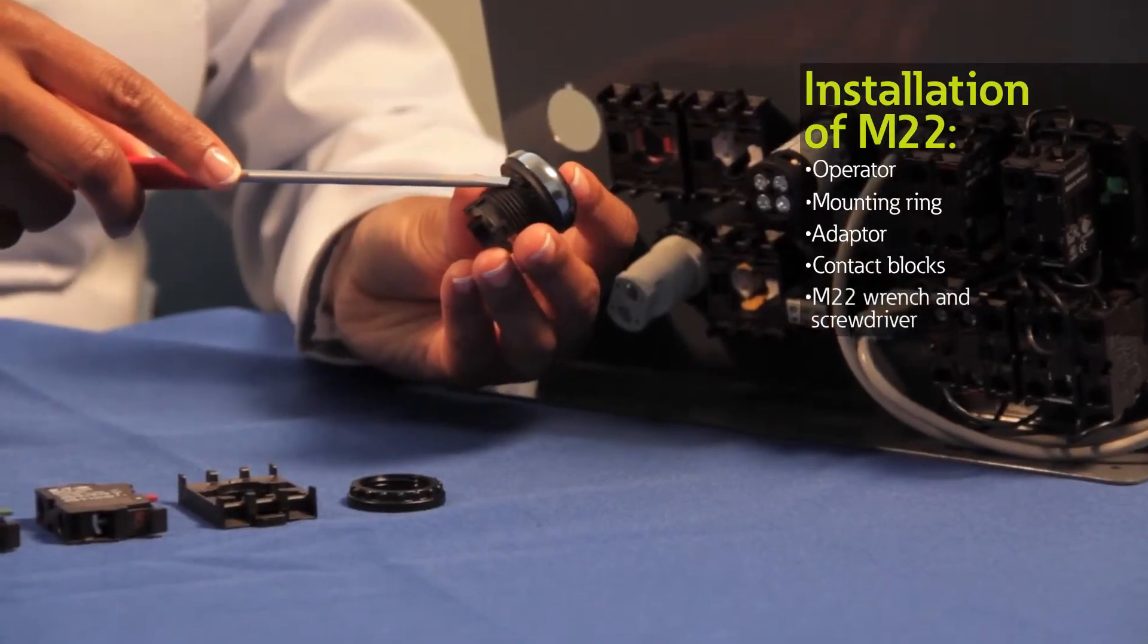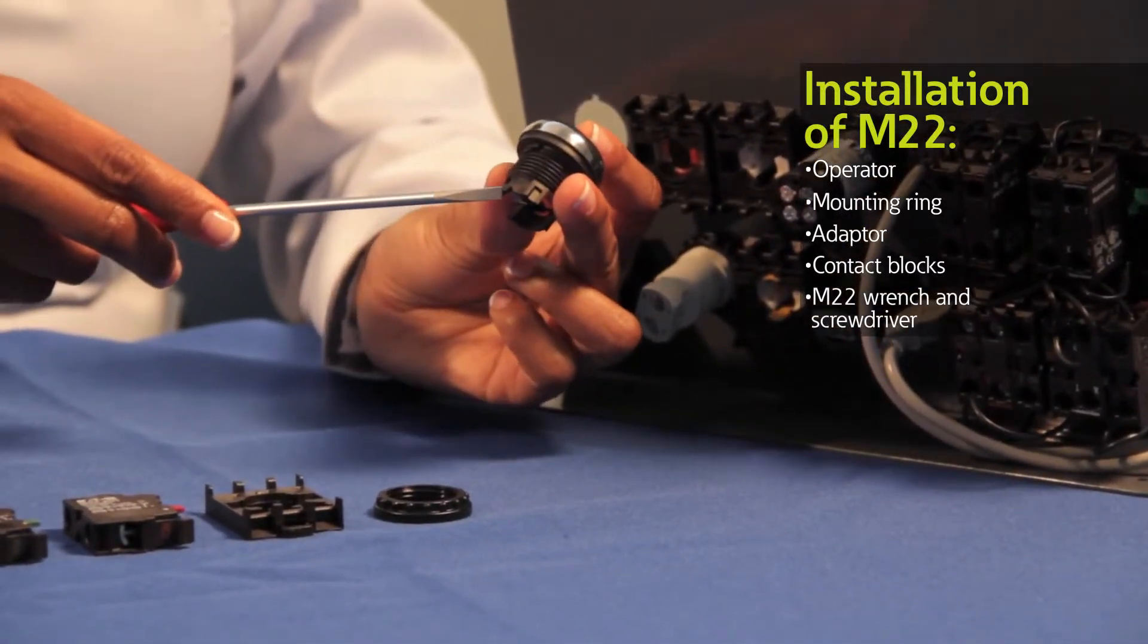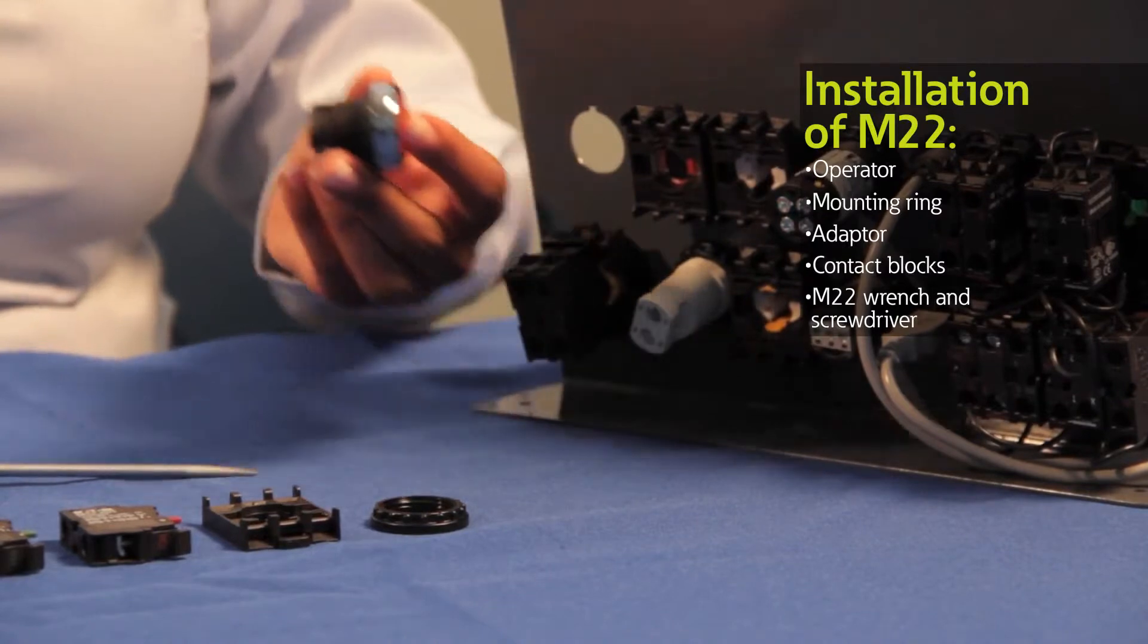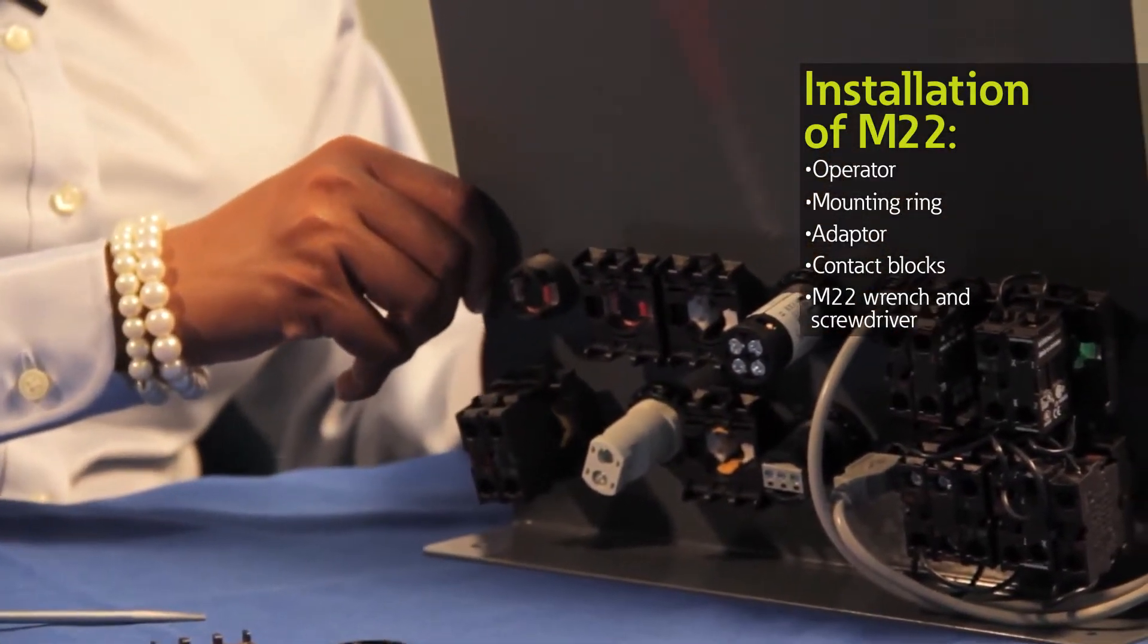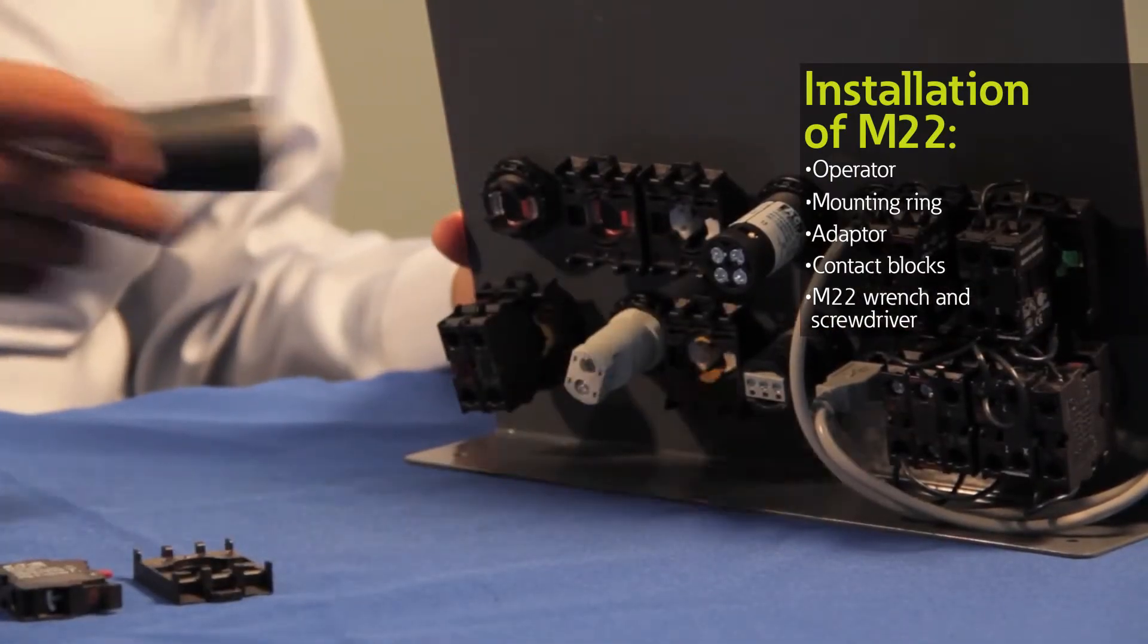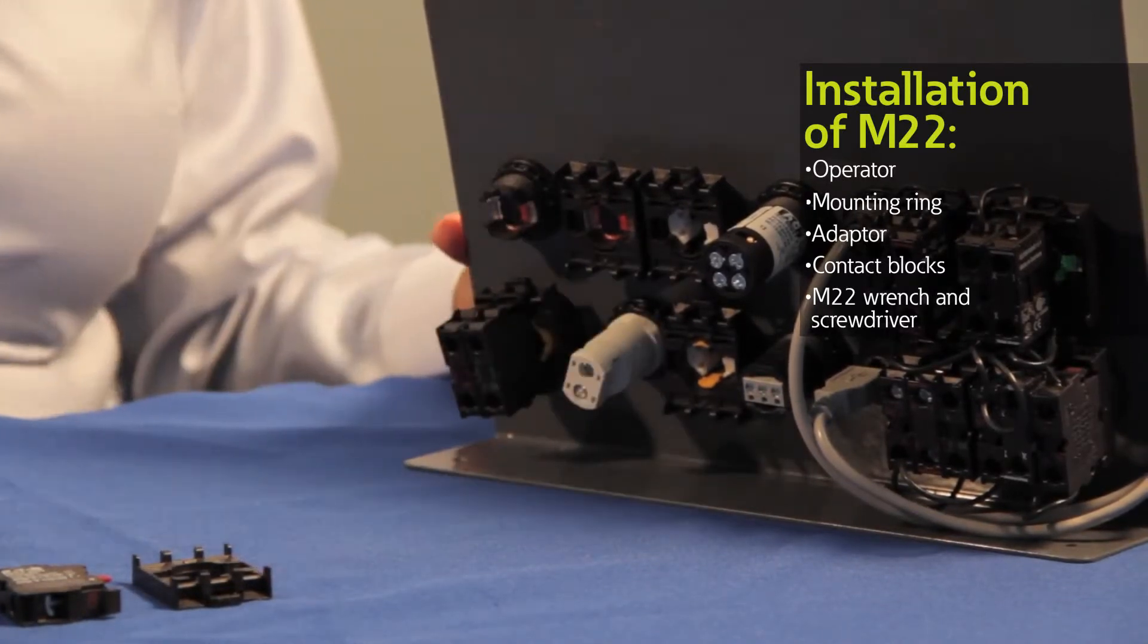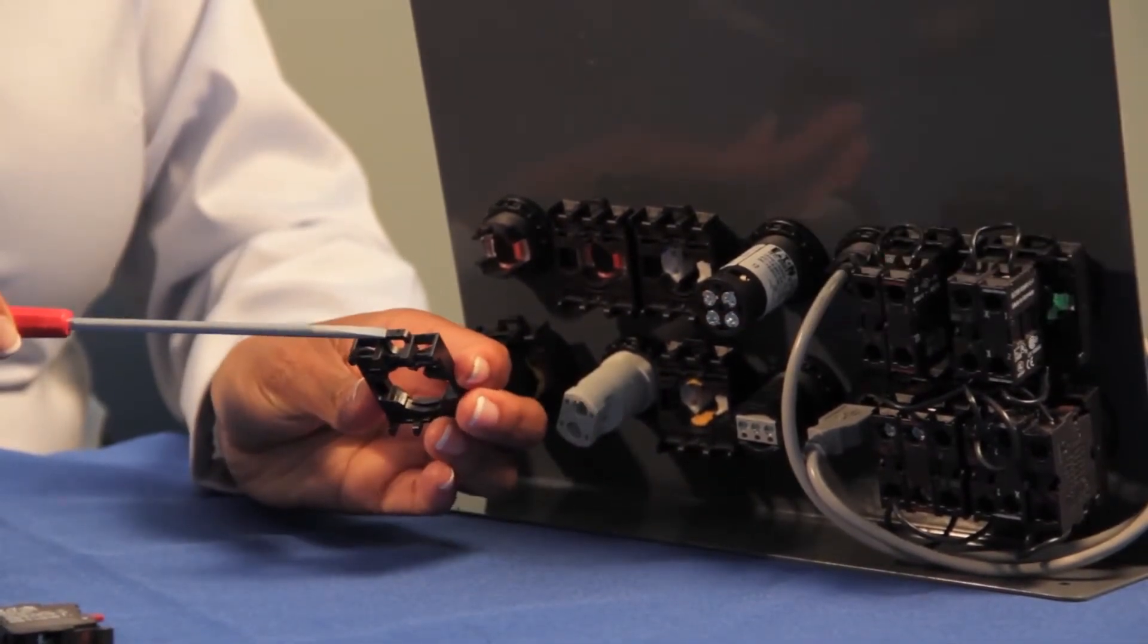First find the anti-rotation tab on the operator which will be on the top of your button. We've also added a V-notch to help with placing the button in the correct position. Next insert the operator from the front of the panel making sure that the anti-rotation tab fits through the notch on your panel. Now add the mounting ring. I'm using an M22 wrench to firmly secure the operator in place.